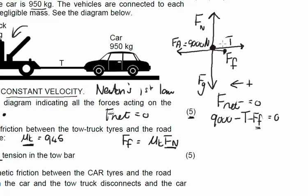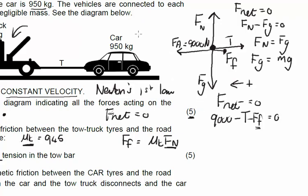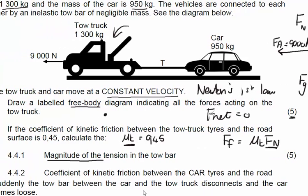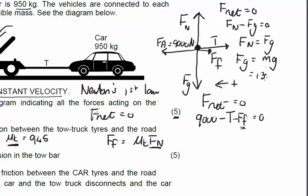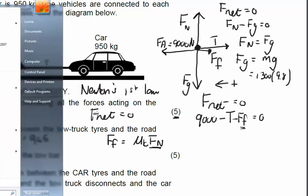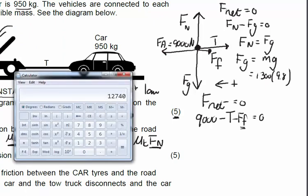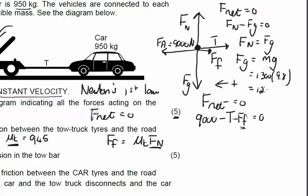If I look at my free body diagram in the vertical, I can also say that F_net equals 0. If I take up as positive, F_N minus F_G has to be equal to 0. So, I can figure out what F_G is because F_N is actually equal to F_G in size. What is F_G? We know that F_G equals MG. The mass of the tow truck was 1,300 kilograms. So, we're going to have 1,300 times 9.8. That gives me 12,740 Newton. So, if F_G equals F_N, F_N is going to be equal to 12,740 Newton.